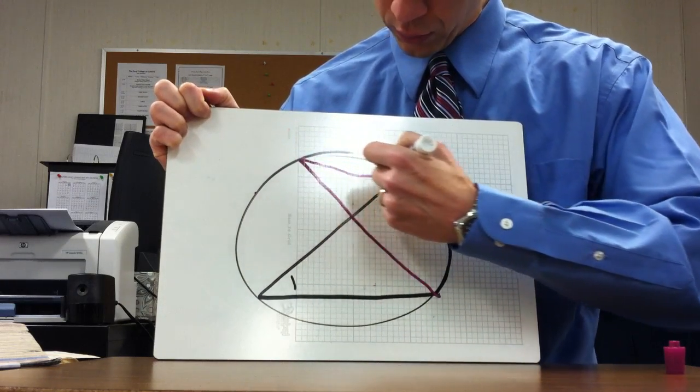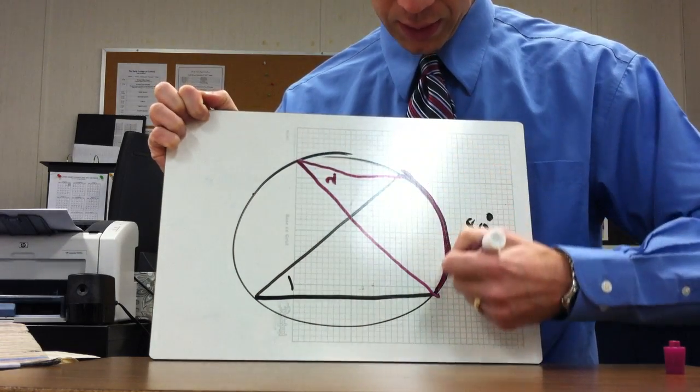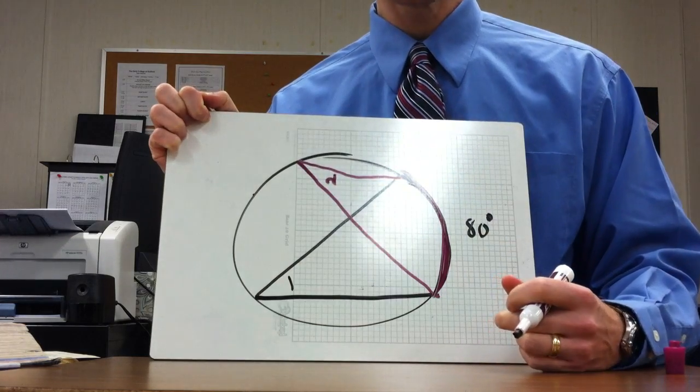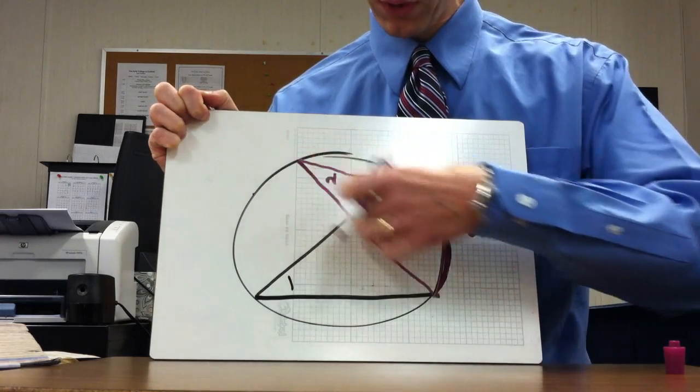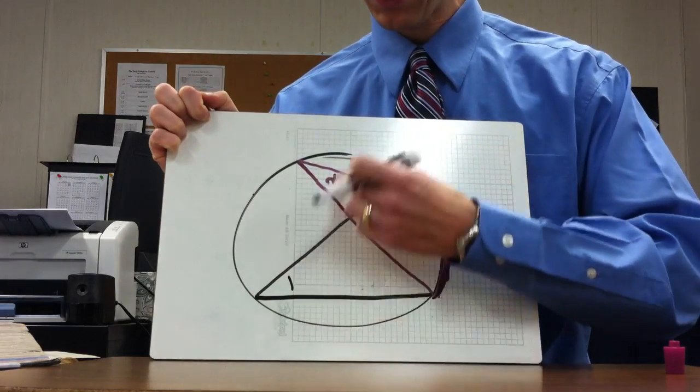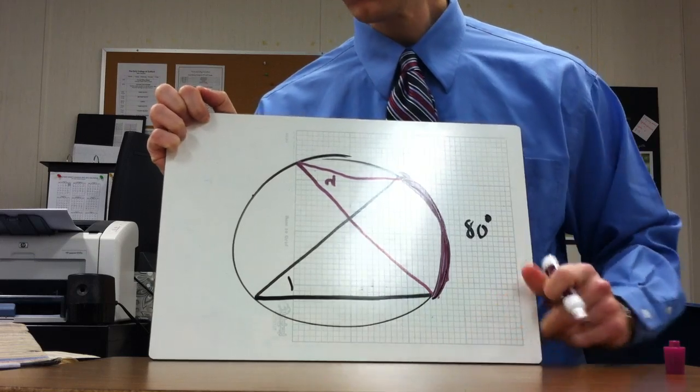So here is angle two, and if you follow it out, it intercepts the exact same arc, so it would also be 40 degrees. So the corollary says that if you have two inscribed angles that intercept the same arc, they have to be congruent. So you can conclude that angle one and angle two are congruent.